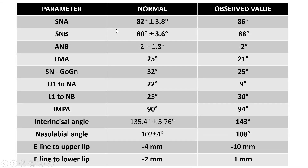Coming to cephalometric parameters, SNA as well as SNB both were increased; however, SNB was more than SNA. A minus 2 degree ANB angle was present, indicating a concave profile and skeletal Class 3 relation. FMA and SN-GoGn both indicate a horizontal growth pattern.